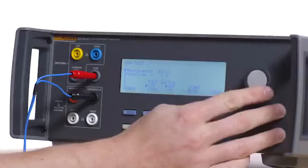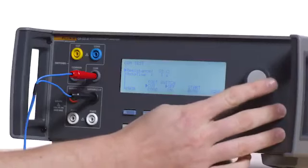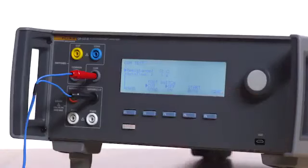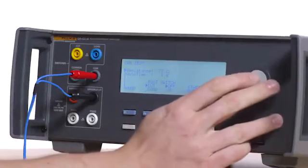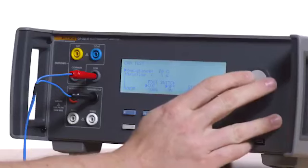Slowly increase the resistance in 1 ohm increments until the REM alarm sounds. The alarm should sound between 77 and 91 ohms.